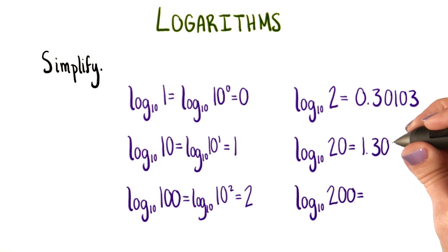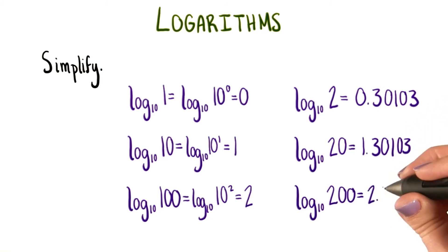Log base 10 of 20 is 1.30103, about. And log base 10 of 200 is about 2.30103. Please remember these are rounded answers.